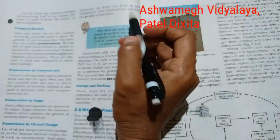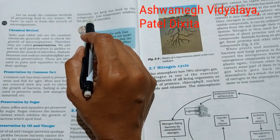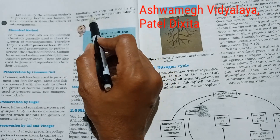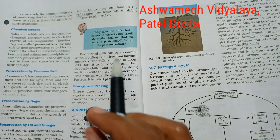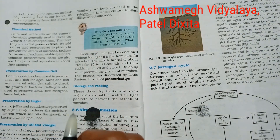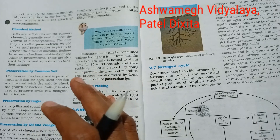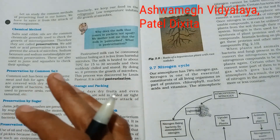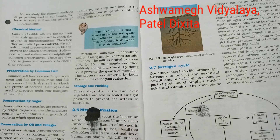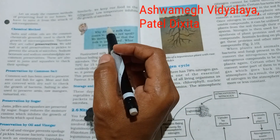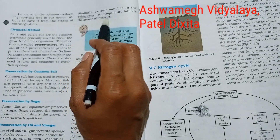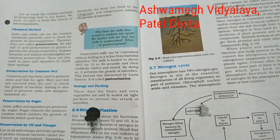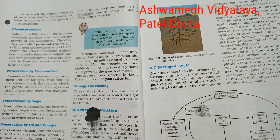Similarly, we keep our food in the refrigerator. We keep vegetables in the refrigerator at a cold temperature so that microorganisms do not grow. Low temperature inhibits the growth of microorganisms — just as high temperature kills microorganisms, low temperature stops their growth.